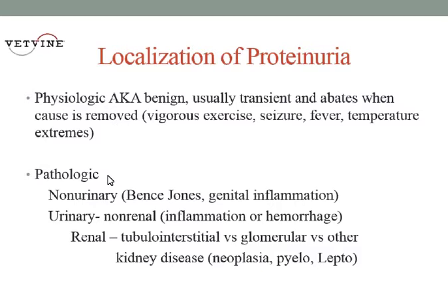So if it's not physiologic — if it's a patient that is basically coming in for geriatric screening — then we have pathologic proteinuria. And it can be urinary or non-urinary. Non-urinary proteinuria on our SSA, which is the only test that will be positive, that would be for Bence-Jones proteins. And then post-urinary or genital — you have inflammation there and you should get some indications. But that doesn't always happen. You can have an active sediment and not have proteinuria present because albumin isn't necessarily always leaked out to that degree.